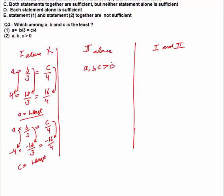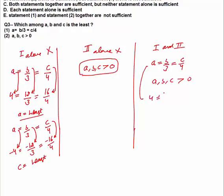Statement 2 alone says a, b, c are greater than or equal to zero. But this alone doesn't tell us which is the least — all could equal zero. So Statement 2 alone is not sufficient. Now combine: a = b/3 = c/4 along with a, b, c greater than or equal to zero. All are positive, so a = 4, b = 12, c = 16 — a is the least.